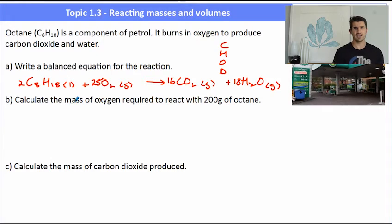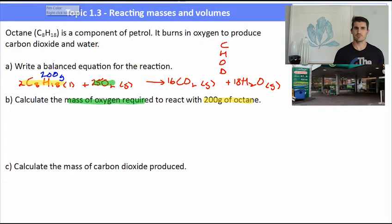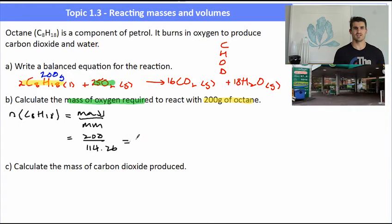The question says: calculate the mass of oxygen required to react with 200 grams of octane. The thing we want is the mass of oxygen; the thing we've been given is 200 grams of octane. The procedure remains the same — calculate the number of moles of the thing we've been given, in this case octane, using mass over molar mass. So we have 200 divided by the molar mass of octane, 114.26, which gives us 1.75 moles of octane.